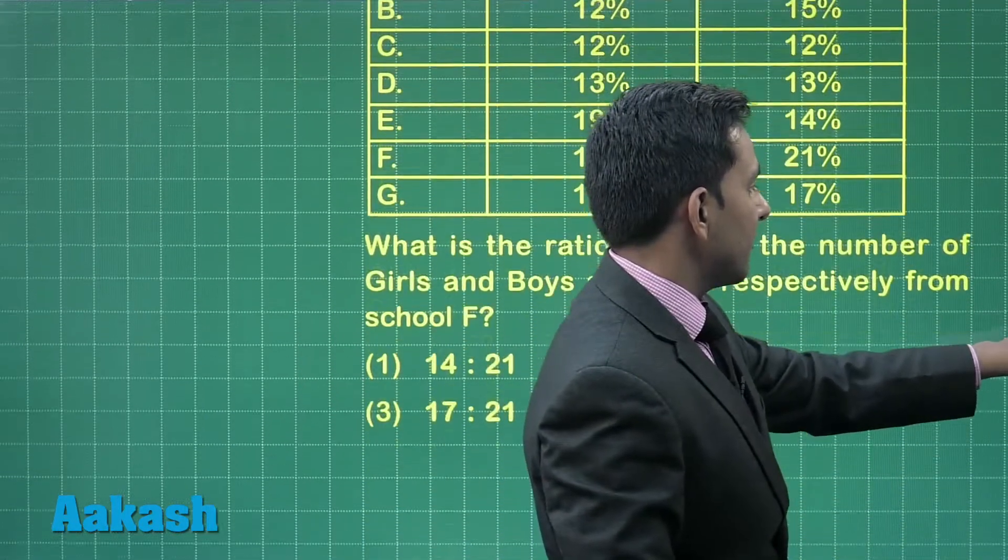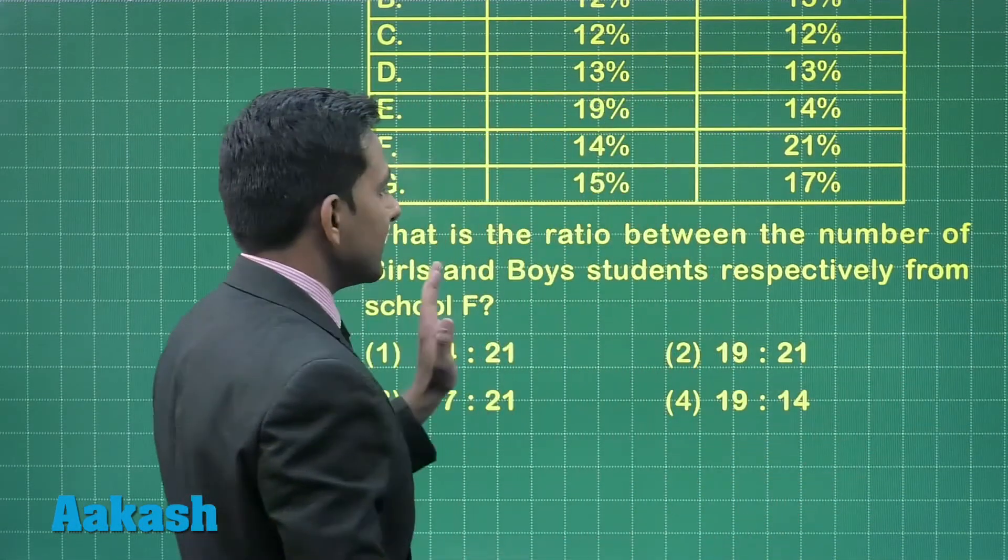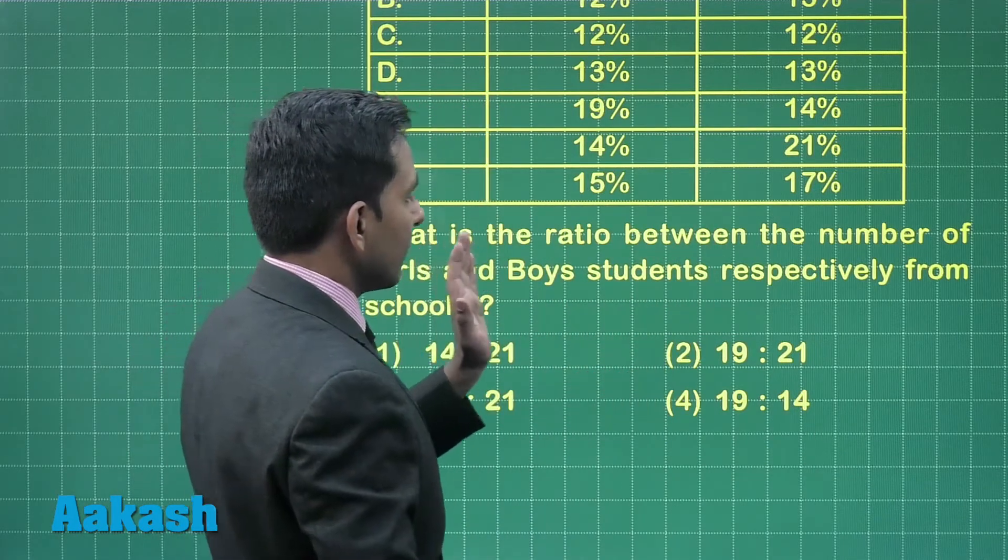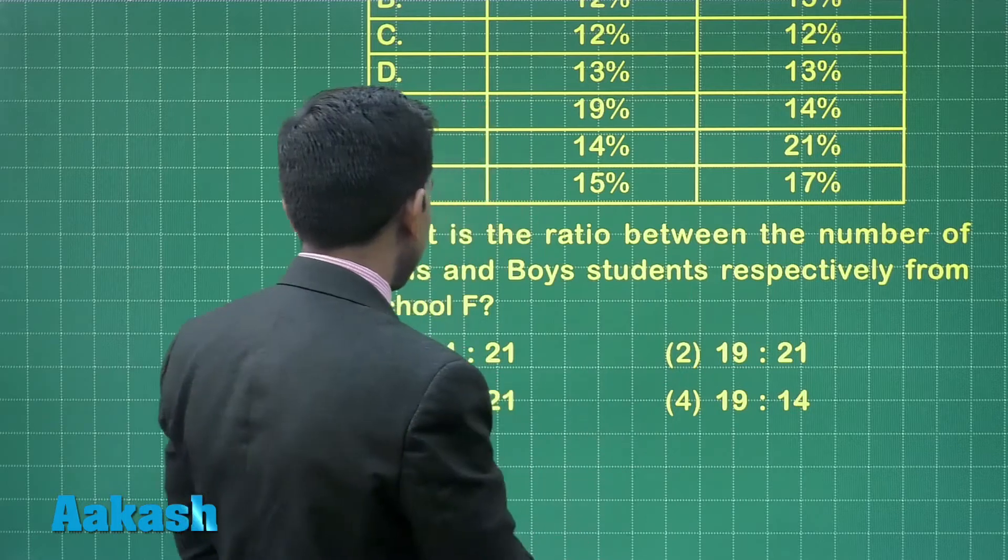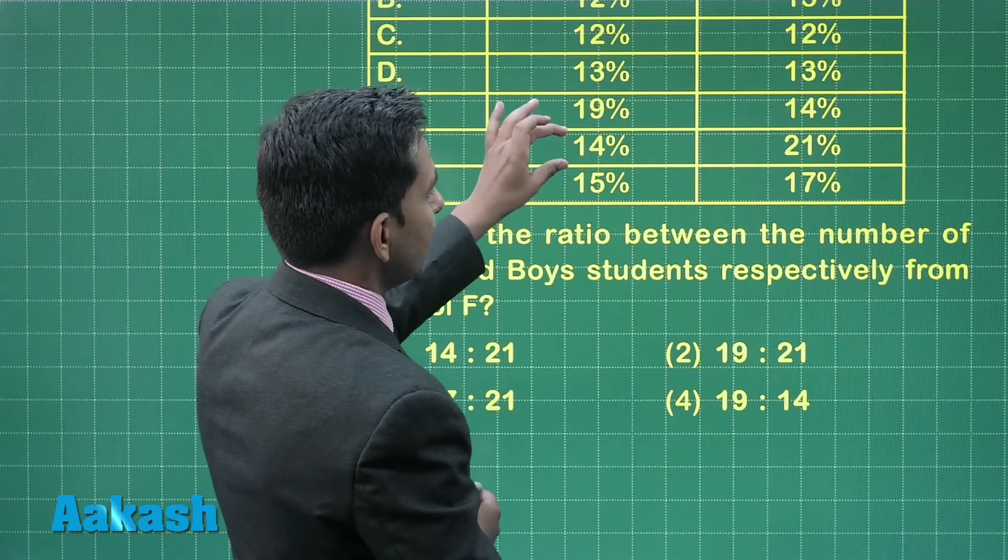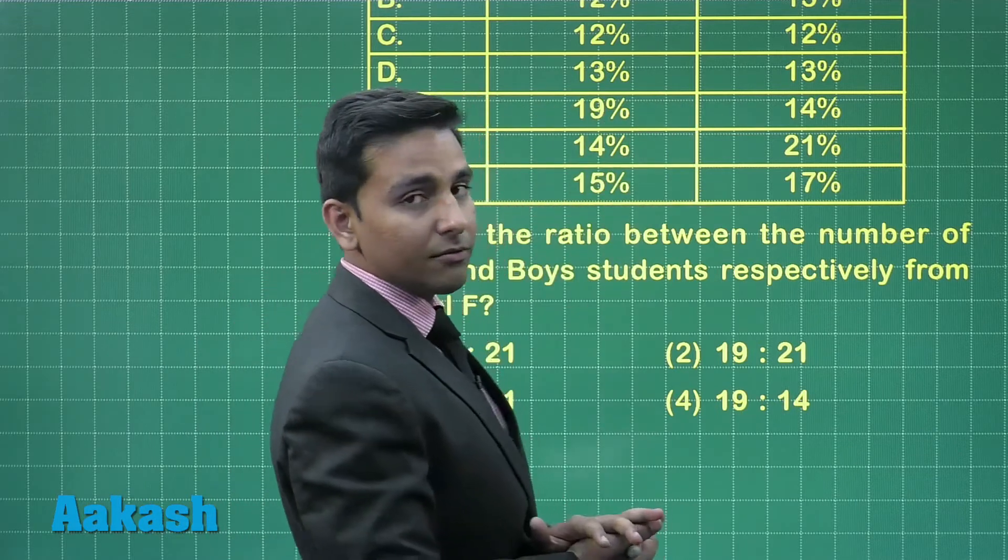The question asks: what is the ratio between the number of girls and boys students respectively from school F? We can see that school F has 14% of boys and 21% of girls.